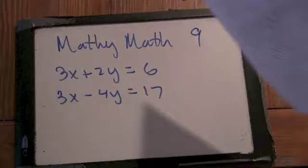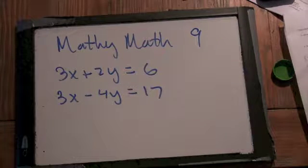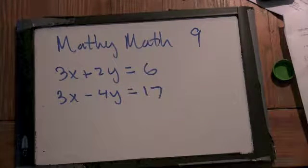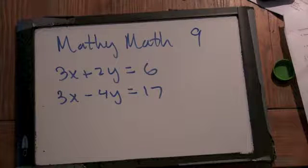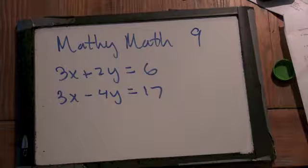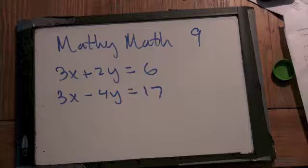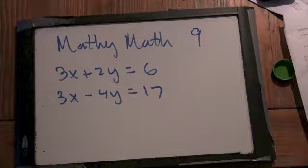You and I have spent a long time since we talked about lines, so this is actually a good review for you. It says draw the lines, 3x plus 2y equals 6 and 3x minus 4y equals 17. Use those figures to estimate the coordinates of the point that belongs to both lines.